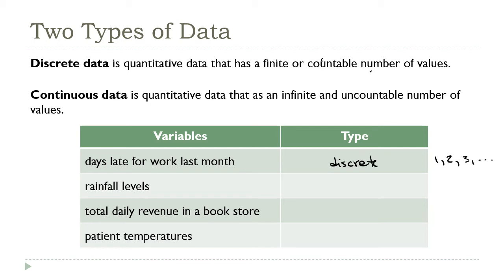Now, rainfall levels, those are decimals, and there's no end to the accuracy here. For example, the level could be 5 inches, could be 5.1, could be 5.01, and so on, right? But there's no end to how far we can push the decimal accuracy, so this is a continuous variable.